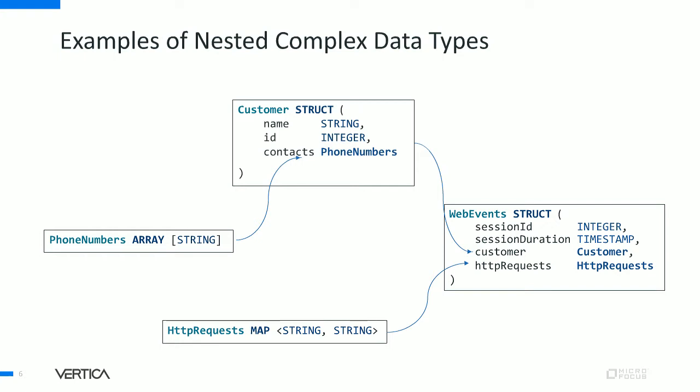Customer is again a complex type of type struct with three fields, where the first two fields, name and ID, are primitive types. However, the third field is another complex type — phone numbers, which we just saw in the previous slide. Similarly, HTTP requests is also the same map type we just saw. In this example, each complex type is independent, and you can reuse a complex type inside other complex types. For example, you can build another type called orders and simply reuse the customer type. However, in a practical implementation you have to deal with complexities involving security, ownership, and lifecycle dependencies.